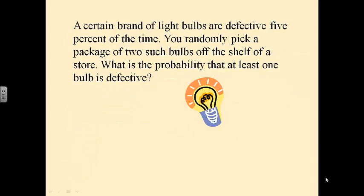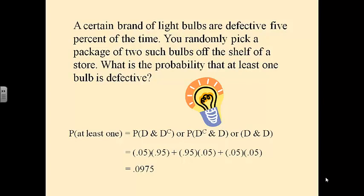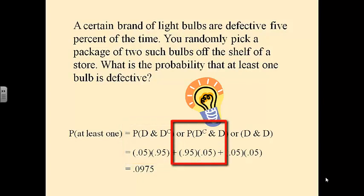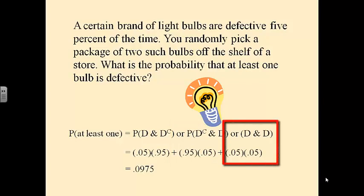What if you randomly pick two such bulbs off the shelf — what is the probability that at least one is defective? Instead of exactly one, we want at least one, so it's a different problem. We have several possibilities: the first is defective and the second is not, the first is good and the second is defective, or both are defective. We calculate each probability separately, multiply them out, and add them all together to get our final probability.